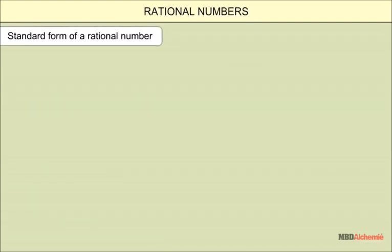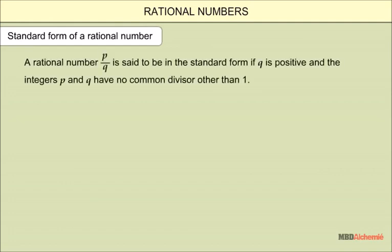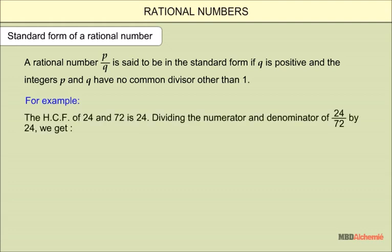Standard form of a rational number: a rational number p/q is said to be in the standard form if q is positive and the integers p and q have no common divisor other than 1. For example, the HCF of 24 and 72 is 24. Dividing the numerator and denominator of 24/72 by 24, we get 24/72 = 1/3.